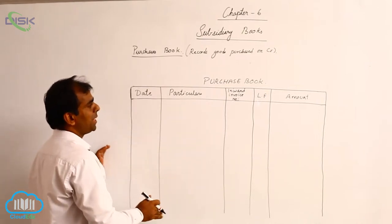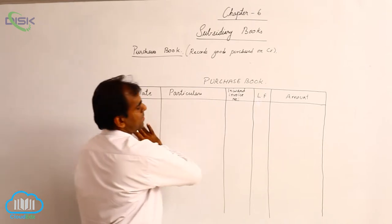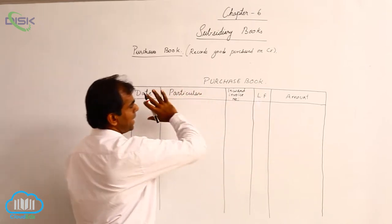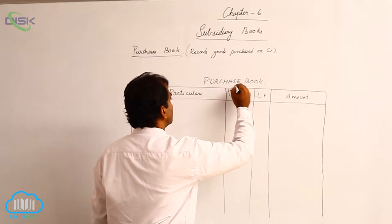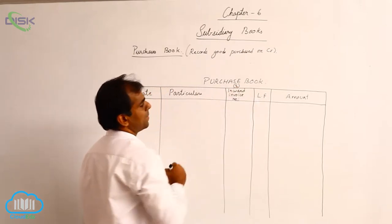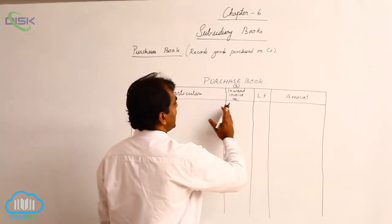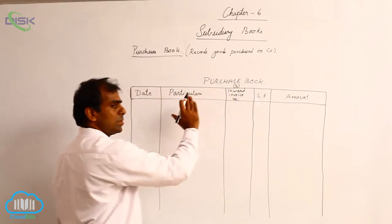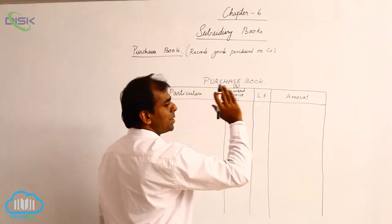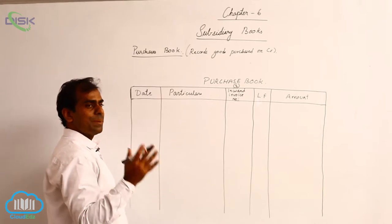Only difference would be the number of columns will remain same, the headings will remain same except this column, the third column. Remember, you have to change the name according to the particular subsidiary book which you will prepare later.